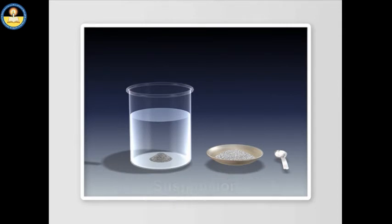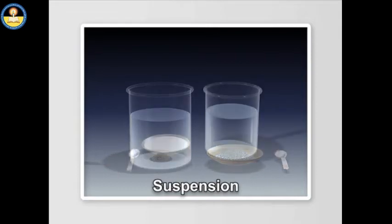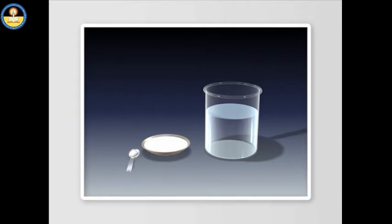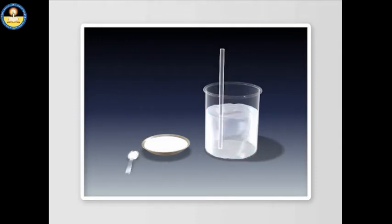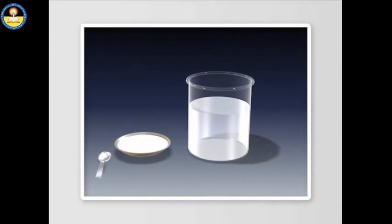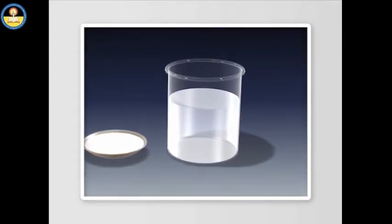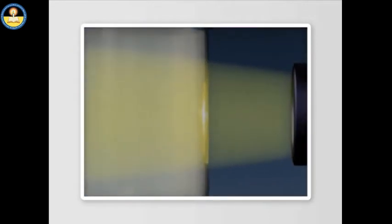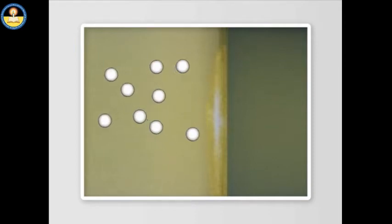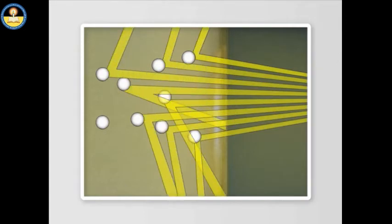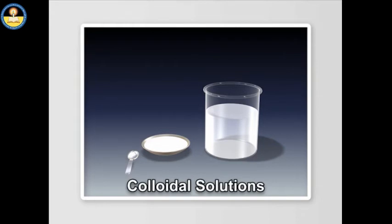In Activity 3, we take a spoon of milk in a beaker containing water and stir thoroughly. We find a turbid white solution — individual milk particles cannot be seen, meaning the particles of milk are too small to be seen with our eyes. However, if a beam of light is passed through this milky solution, the path of the beam becomes visible, showing that fat particles are big enough to scatter the light. These types of mixtures are heterogeneous and are called colloidal solutions.